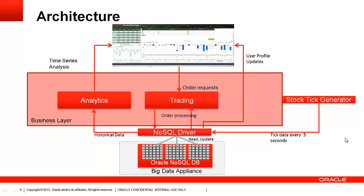Let's see the architecture of Oracle Investments Inc's trading application. At the heart of the application is the Oracle NoSQL DB, which satisfies the data storage needs. The business layer, written entirely in Java, has components for analytics — that is, time series analysis — and for trading. The UI layer gives customers the opportunity to view current trends, view market stories, place trading requests, and perform historical analysis to take an informed decision while trading.